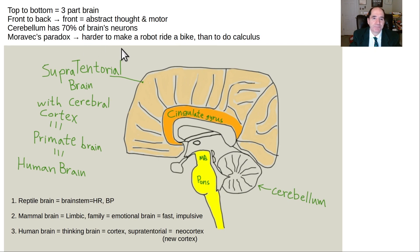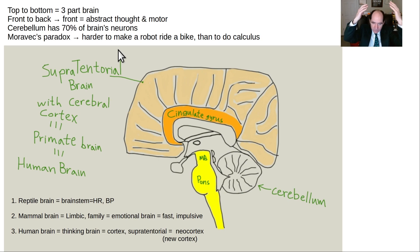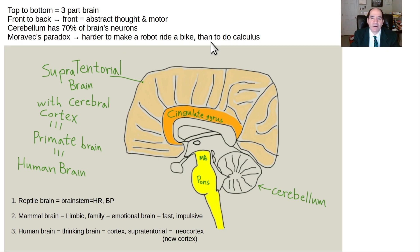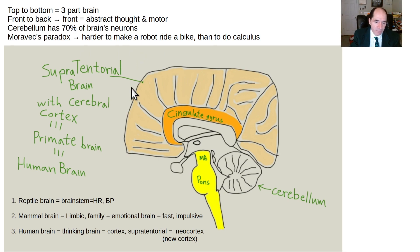Moravec's paradox: they thought it would be hard to get a brain to do calculus, but the reality is the brain is much more focused on movement and vision than on thinking. They could make a calculator to do calculus back in the 1950s, but they're still barely able to get robots to move like humans. The hard thing turned out to be easy; the easy thing turned out to be hard.